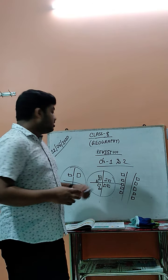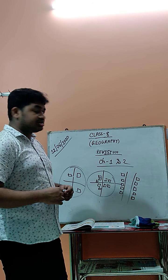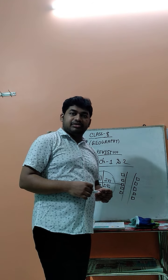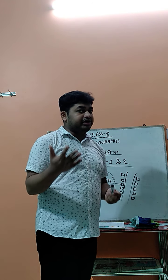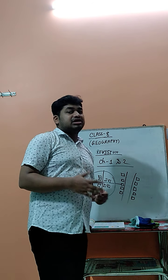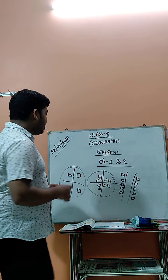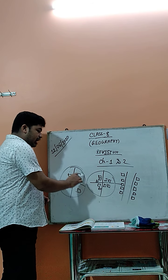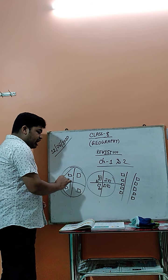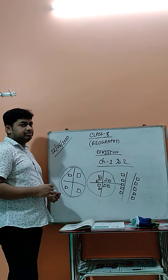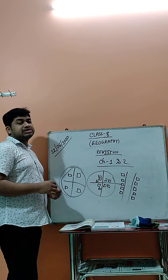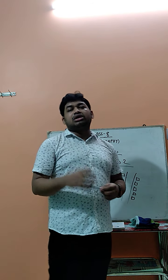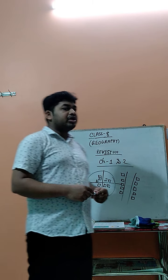This type of settlement pattern is the dispersed or scattered type of settlement. In this type of settlement, all the houses are located very far from each other. This type of settlement pattern is known as the dispersed or scattered type of settlement.